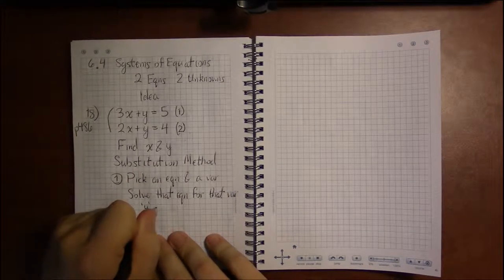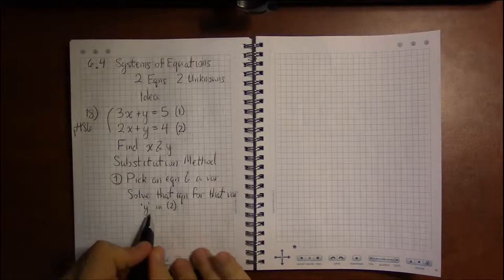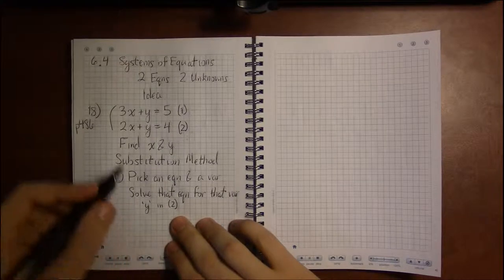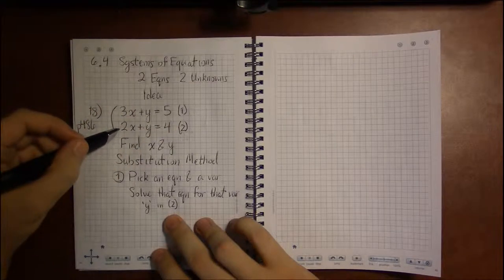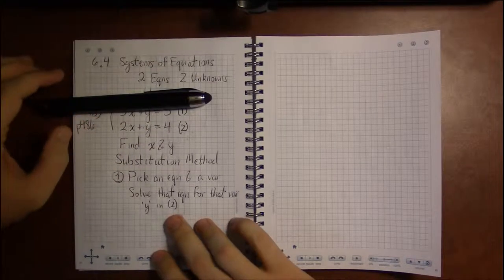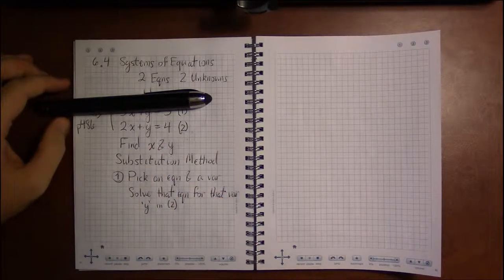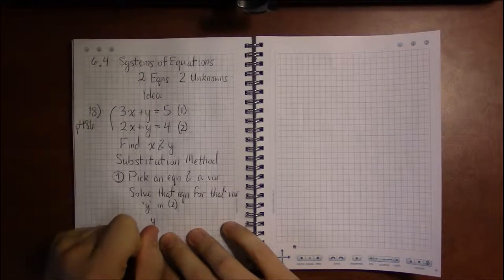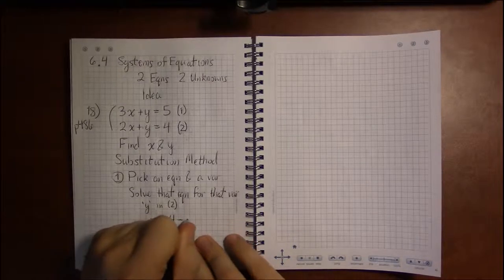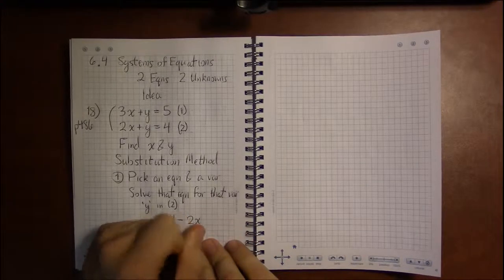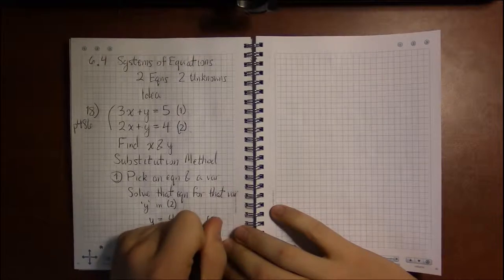So I'll label that down here, trying to write out all my steps and all my thoughts as solving for y in equation two. Well, that means if I just focus on equation two, I'm going to have to subtract 2x from both sides. So by doing that, I'm going to get y equals 4 minus 2x. And I'm going to call this equation three.